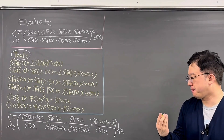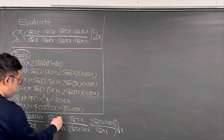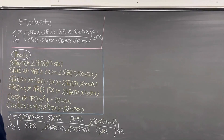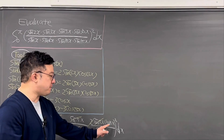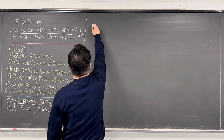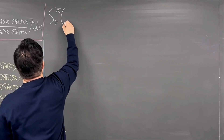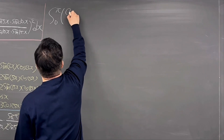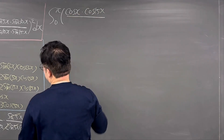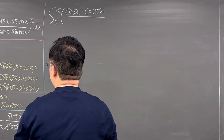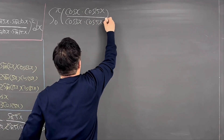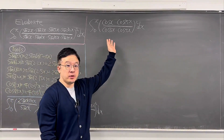After canceling sine(x), sine(3x), sine(5x), sine(15x), and all the factors of 2, the numerator becomes cos(x) times cos(15x), and the denominator becomes cos(3x) times cos(5x). So we are now working on the integral from 0 to pi of [cos(x)·cos(15x) / (cos(3x)·cos(5x))]² dx, which looks much simpler.